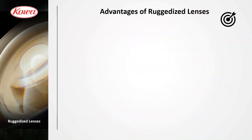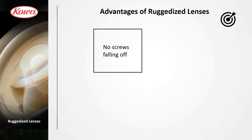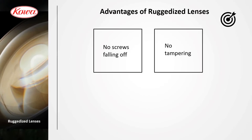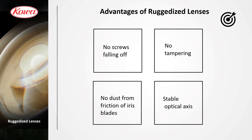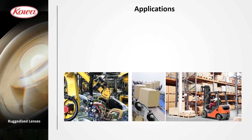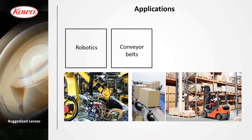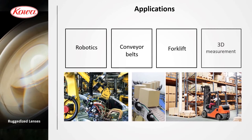The advantages of the ruggedized lenses: no screws falling off, nobody can tamper with the lenses even by mistake, no dust from friction of iris plates, and a stable optical axis. This makes ruggedized lenses an optimal solution for robotics, fast-moving conveyor belts, forklifts, or 3D measurement applications for which a stable optical axis is crucial.